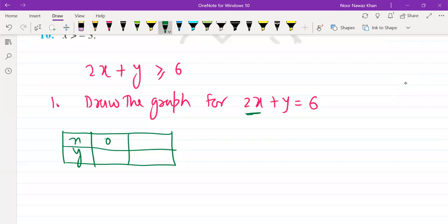If x is 0, then the whole portion is 0. So, how much is y? If x is 0, 2 into 0 is 0, so y is 6.